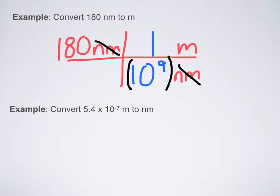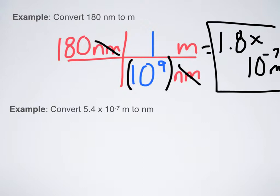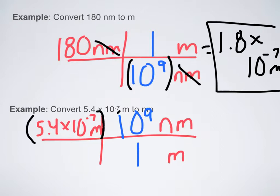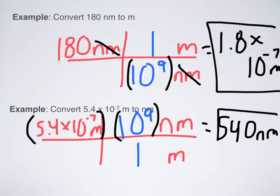The answer in scientific notation is 1.8 times 10 to the negative 7 meters. Now let's do the opposite: convert 5.4 times 10 to the negative 7 meters to nanometers. Using the factor label method, I put the given unit on the bottom and the unit I want on top. The relationship is 10 to the 9th nanometers over 1 meter. When you plug that into your calculator, you get 540 nanometers — and that makes sense given our answer to the last one. That's how you convert from nanometers to meters or meters to nanometers.